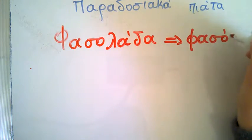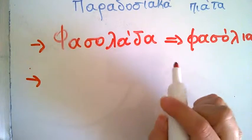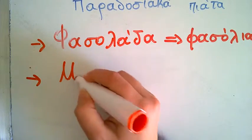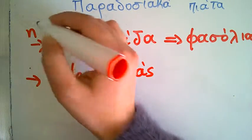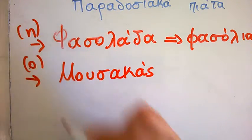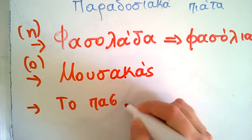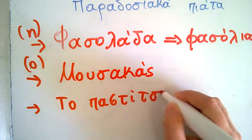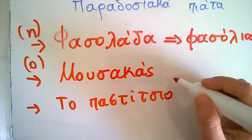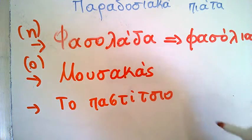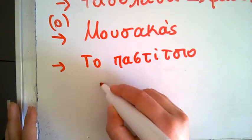Fasolada. Another traditional dish is moussaka. Moussaka. Fasolada is with beans, fasolia. Moussaka is with sliced meat, as pastitio as well. These are three Greek traditional dishes.